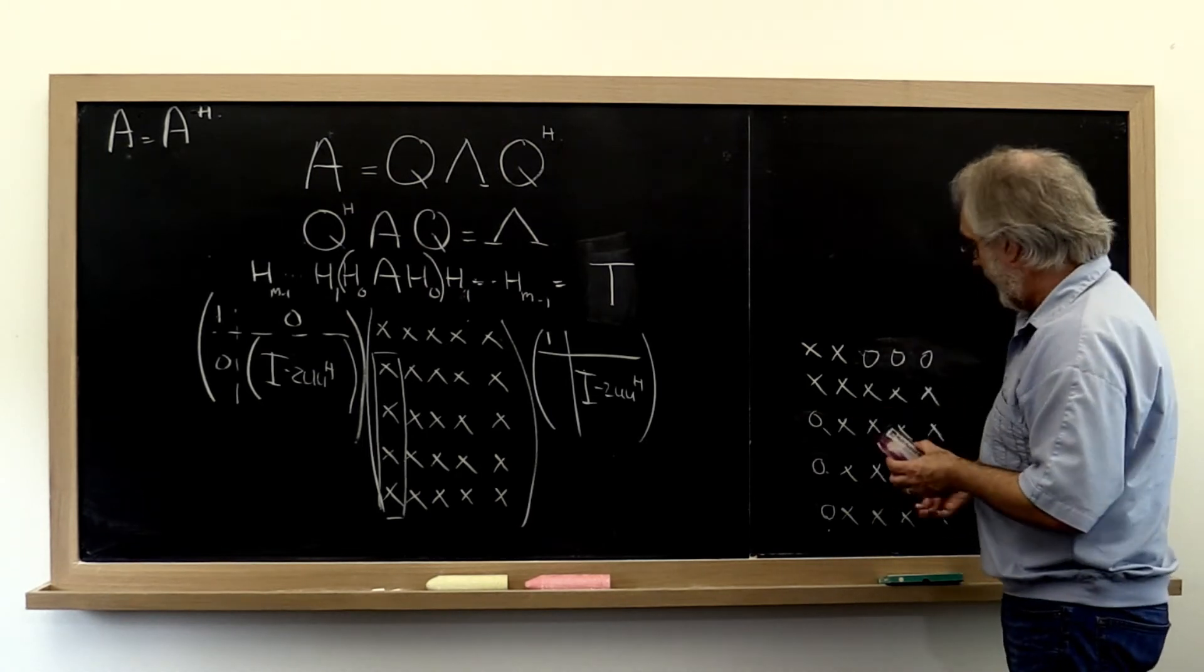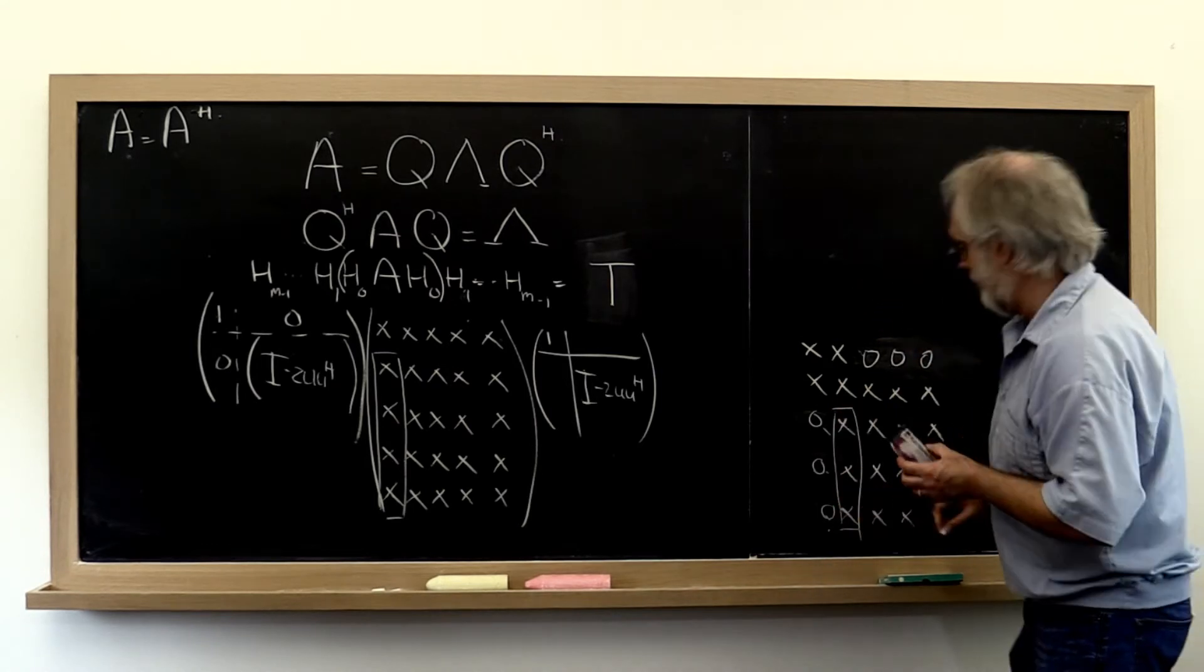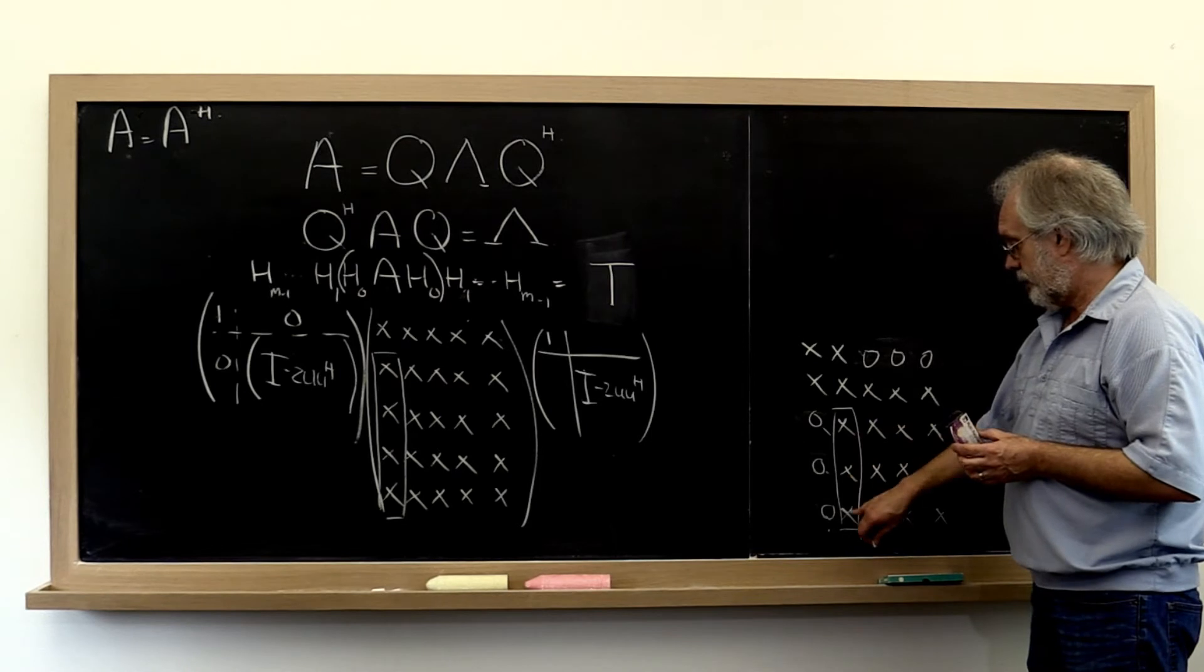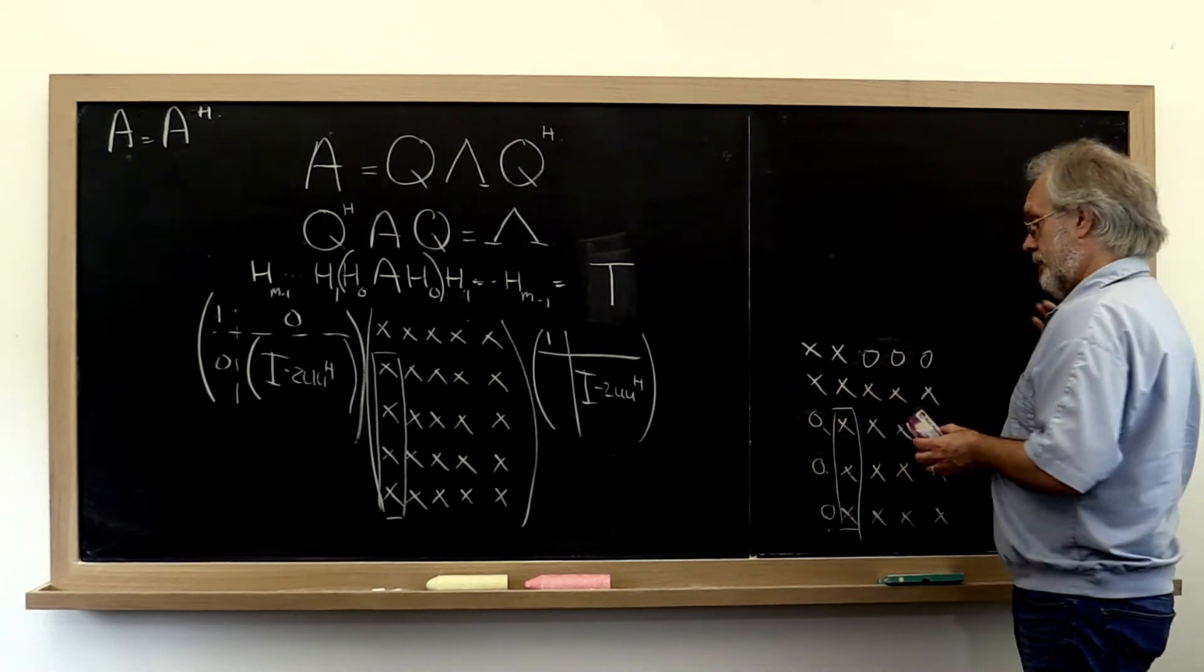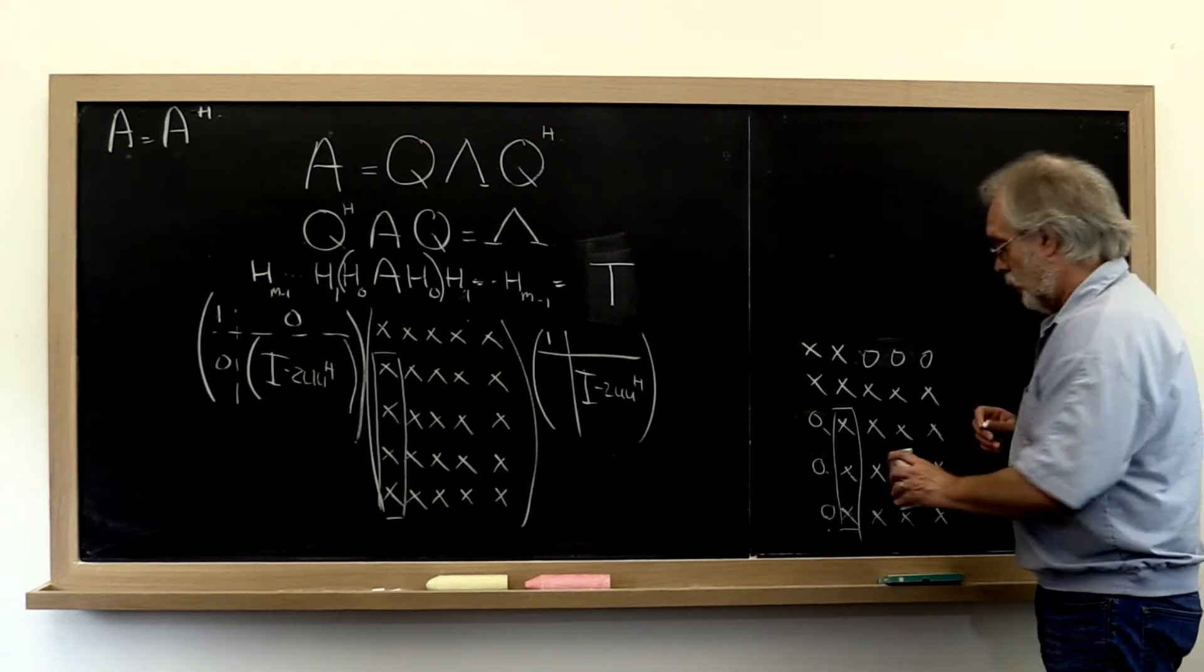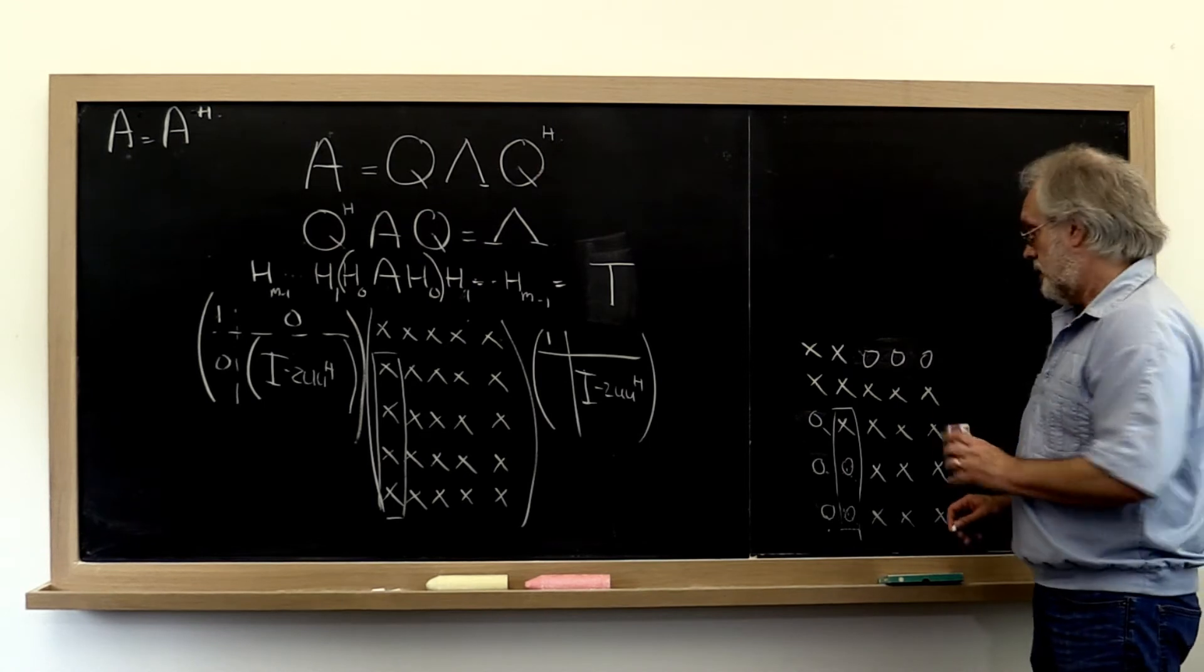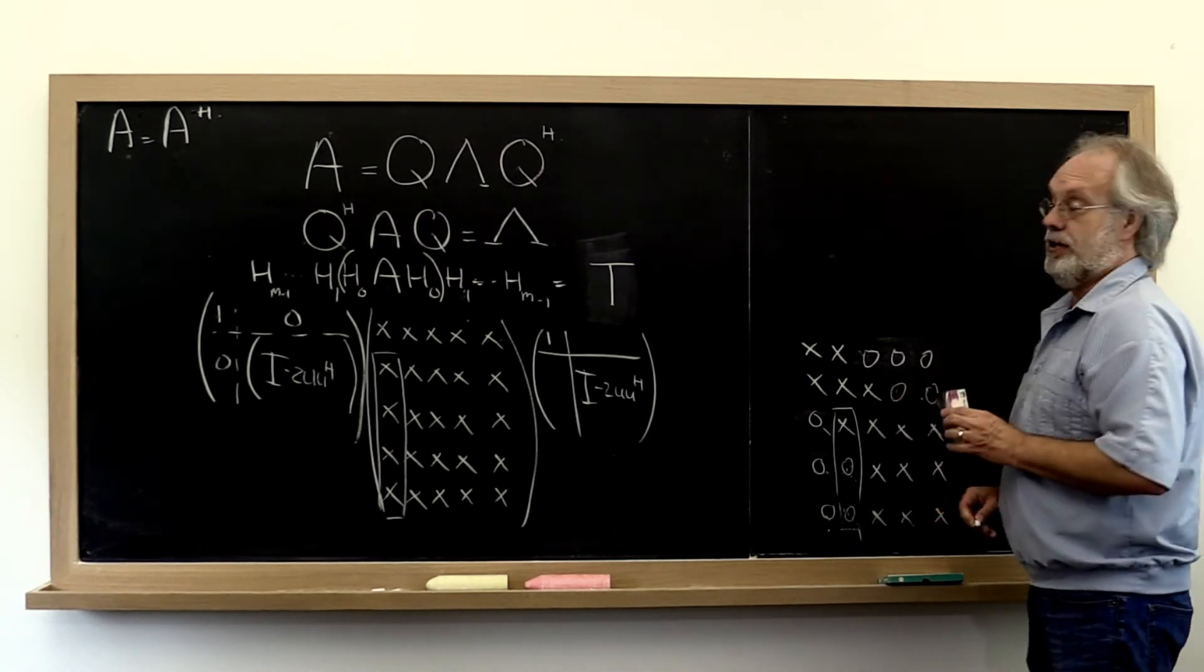Now next we can look at this part of the second column and find a Householder transformation that creates zeros right here and apply that from the left and from the right. When we do that we end up with a matrix that looks like this, and by symmetry right here.